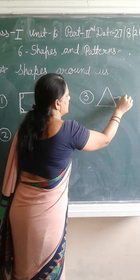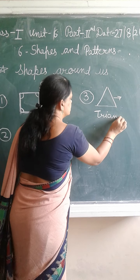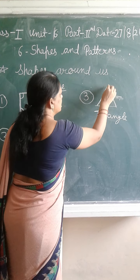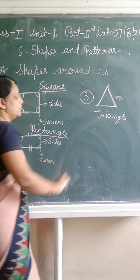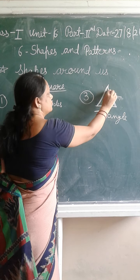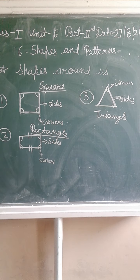Triangle. This shape is triangle. It has three sides — one, two, three — and three corners — one, two, three. So, triangle has three sides and three corners.